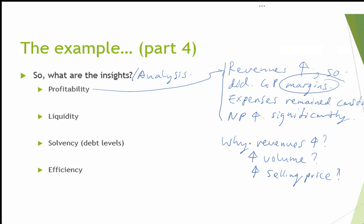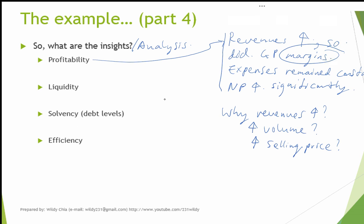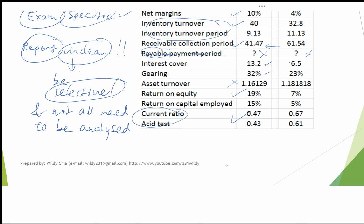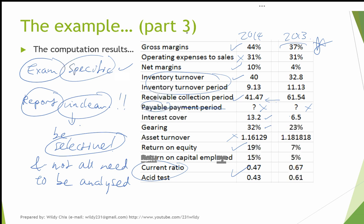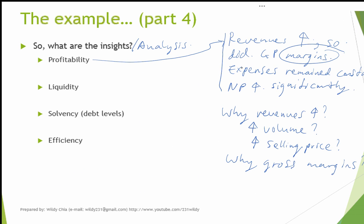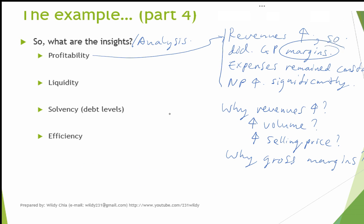Depending on the word limit, you may even go further to talk about the gross margins — how come they improved so significantly? According to my calculations, gross margins increased from 37% to 44%, a drastic increase of 7%. You may mention that because there was a decline in cost of goods — cheaper goods but higher prices — you earn higher margins. That addresses the profitability aspect, but you have to vary the length of your writing to fit your assignment or exam requirements.